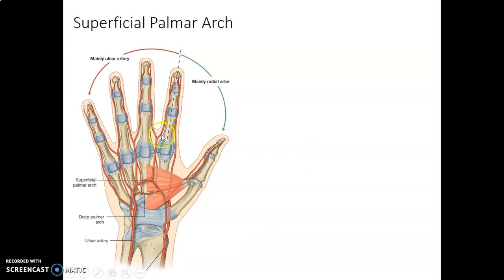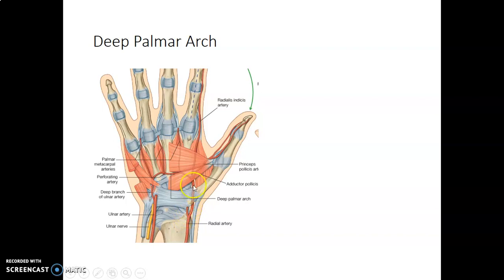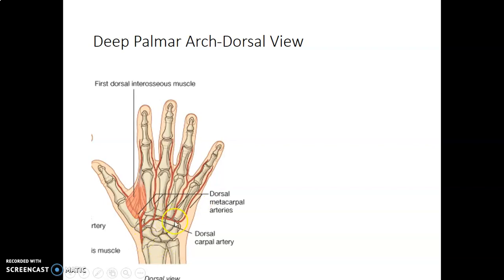Each common palmar artery divides to give proper palmar digital arteries to the digits. The deep palmar arc is mainly formed by the radial artery, completed medially by joining the ulnar artery. Its branches are princeps pollicis to the thumb, radialis indicis to the index finger, and the palmar metacarpal arteries.